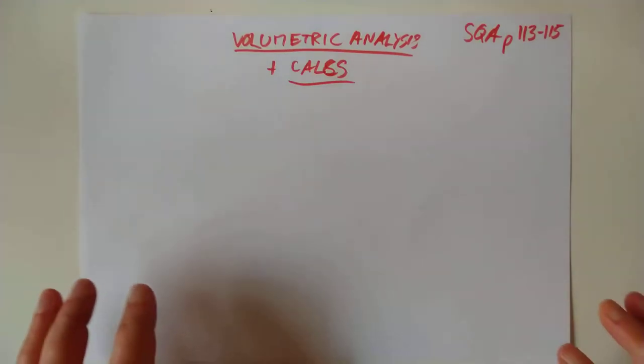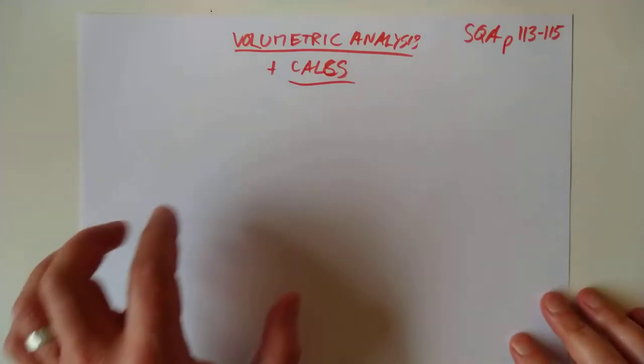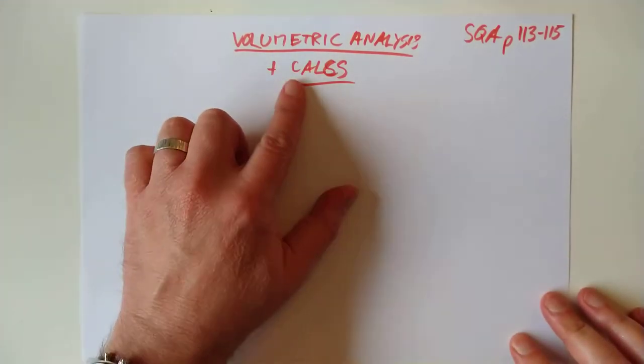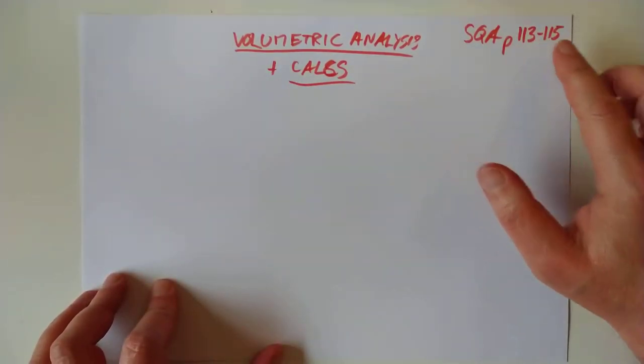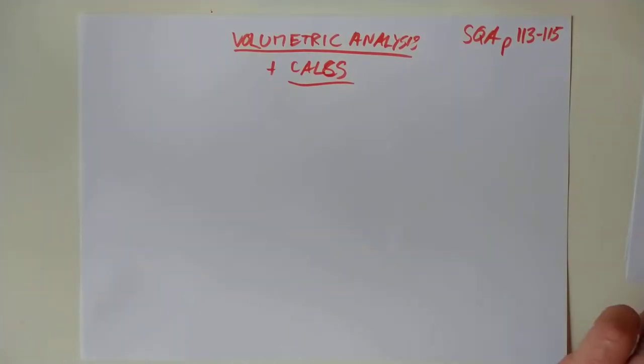Hello folks, welcome back to Advanced Higher Chemistry. We're having a look at a different category of calculation today. We're having a look at volumetric analysis and the calculations that go with them. That's SQA 113 to 115. Let's do the theory first and then we'll run through maybe a couple of examples.